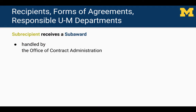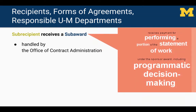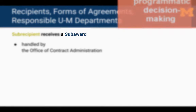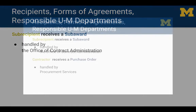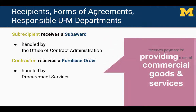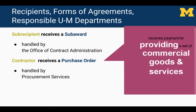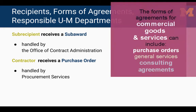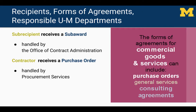A collaborator defined as a subrecipient is an organization that receives payment for performing a portion of the statement of work, including programmatic decision-making. The form of agreement is a subaward, written, negotiated, and managed by the Office of Contract Administration. A contractor is an organization that receives payment for providing commercial goods and services. The forms of agreement at U of M include purchase orders, general services agreements, or consulting agreements, written, negotiated, and managed by procurement services.